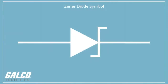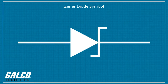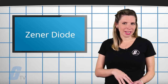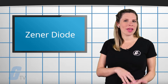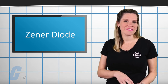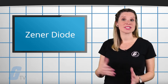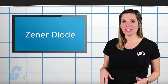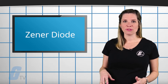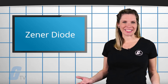Like a traditional semiconductor diode, a Zener diode directs the flow of a current forward in one direction, but a feature unique to the Zener diode is that when the voltage exceeds a certain value as the breakdown voltage, the Zener diode will allow the current to flow in the opposite direction.